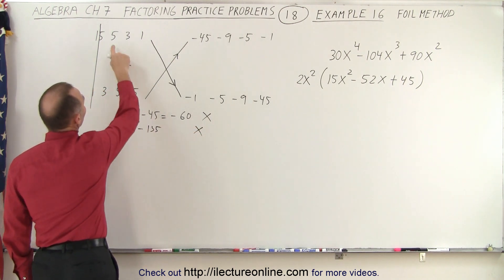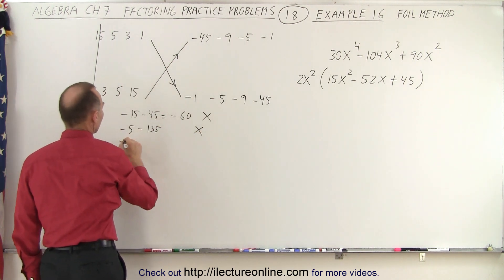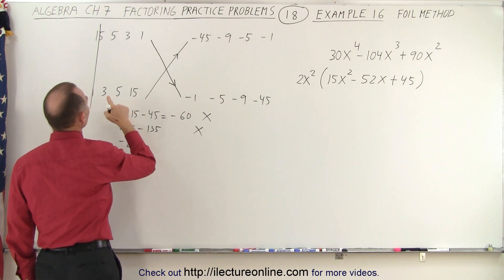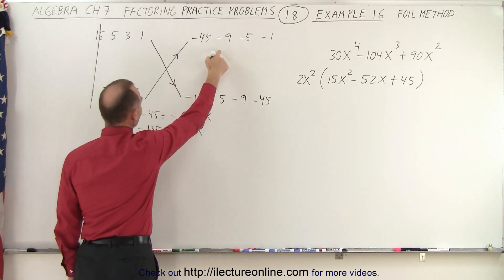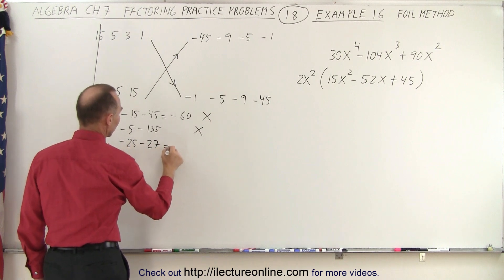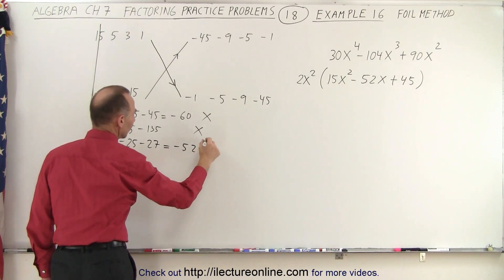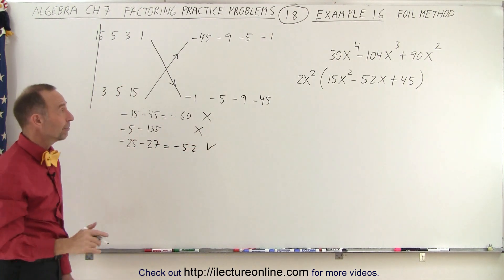How about 5 times negative 5, that's minus 25, and 3 times negative 9 is minus 27. When I add those together, I get minus 52, and that's exactly what I was looking for.